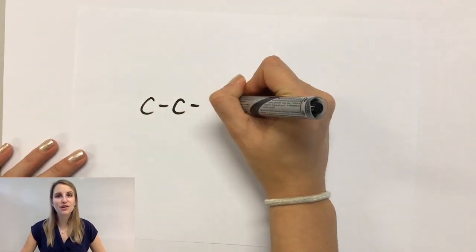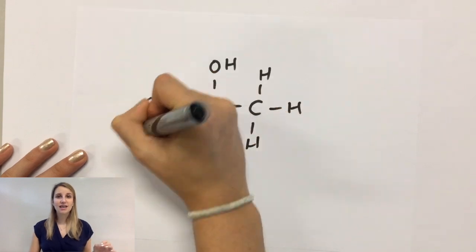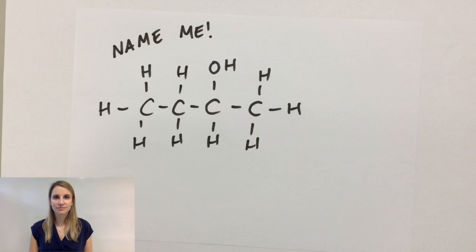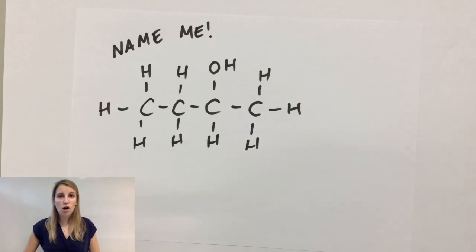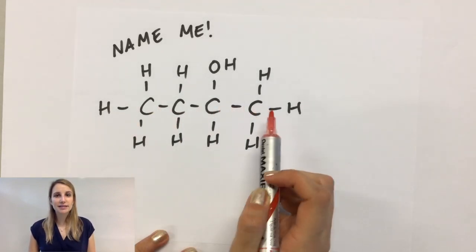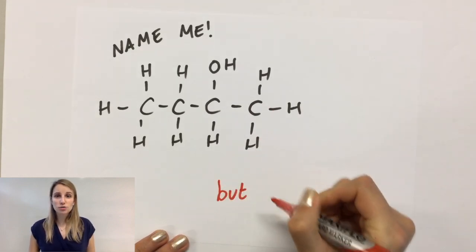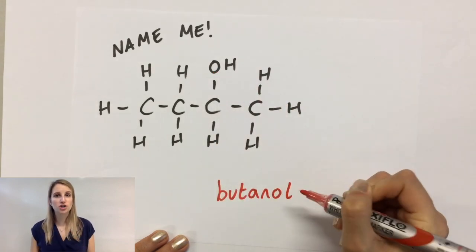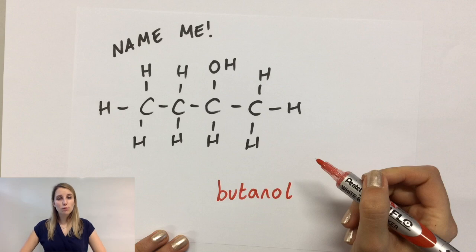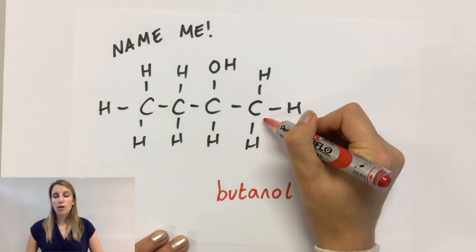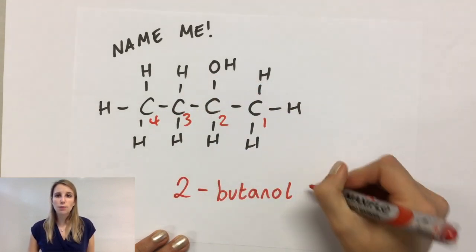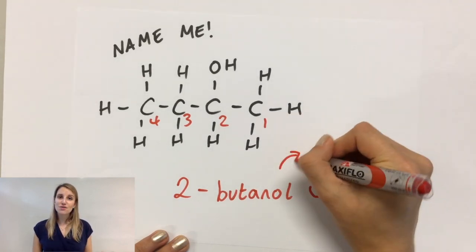Let's see if you can do one on your own. Pause the video and see if you can name this molecule without any help. So the first thing you should have done is realize that it's got four carbons. Four carbons means it's going to start with bute, and it's also got an OH group which means it has to end in anol, making it a form of butanol. Counting the carbons, the OH group is attached to carbon number two, so we call this 2-butanol.